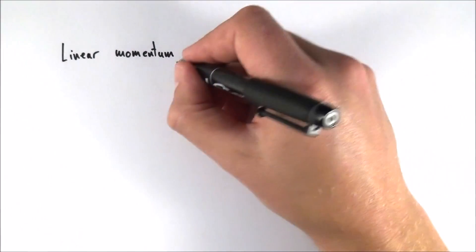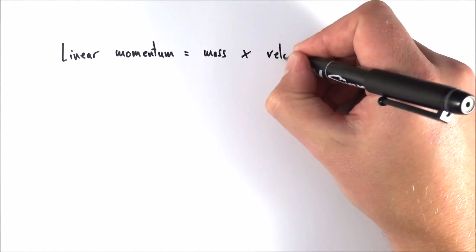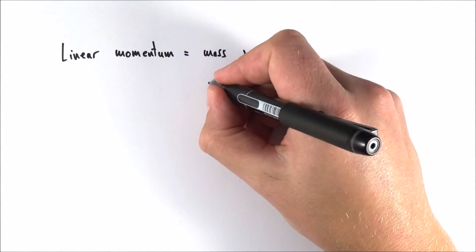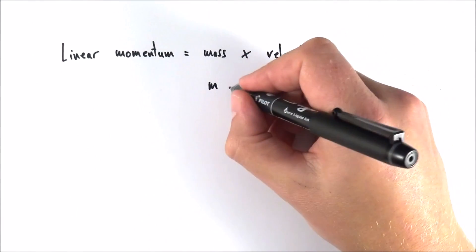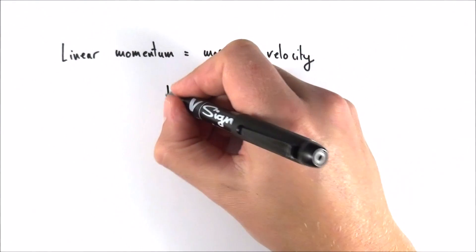So linear momentum, this is the product of mass multiplied by velocity. And if we think about the symbols that we use for that, we use little m for mass and we're going to use v for velocity, and this gives us the symbol for linear momentum which is P.